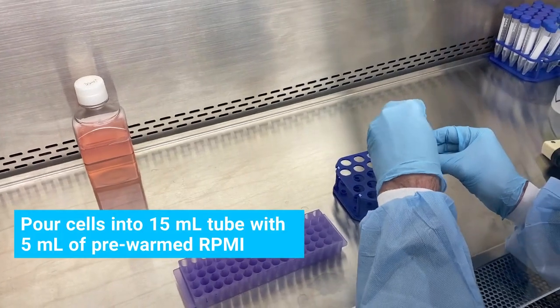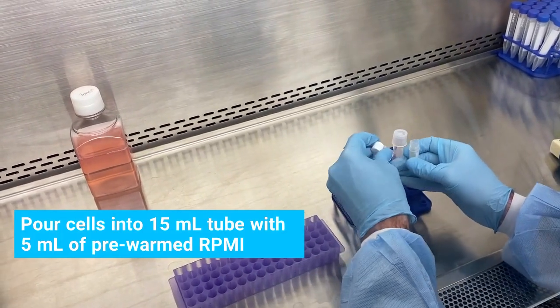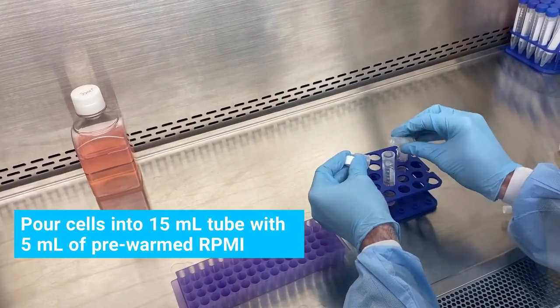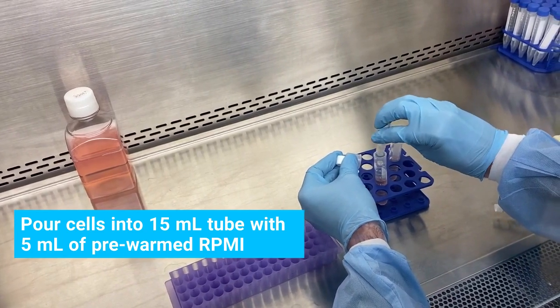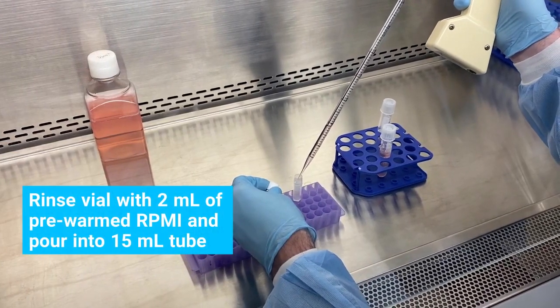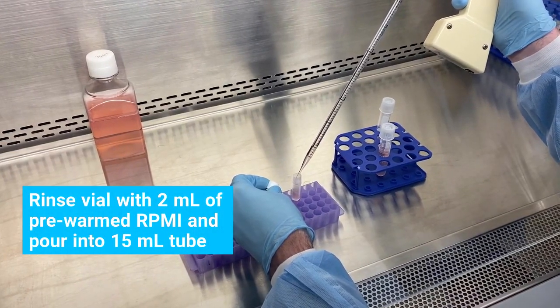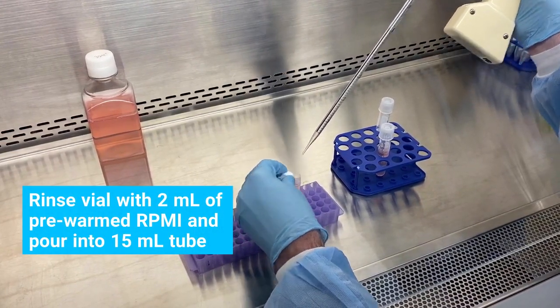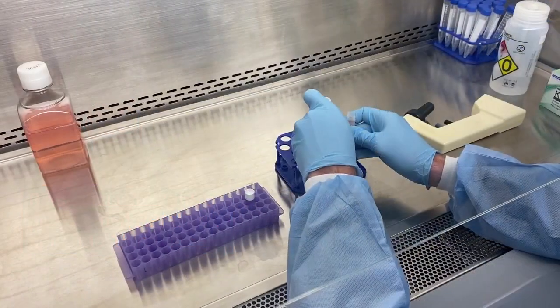Pour thawed cells into a 15-milliliter tube with 5 milliliters of RPMI that has been pre-warmed to 37 degrees Celsius. Rinse the vial with 2 milliliters of RPMI and pour into the 15-milliliter tube to recover the remaining cells.